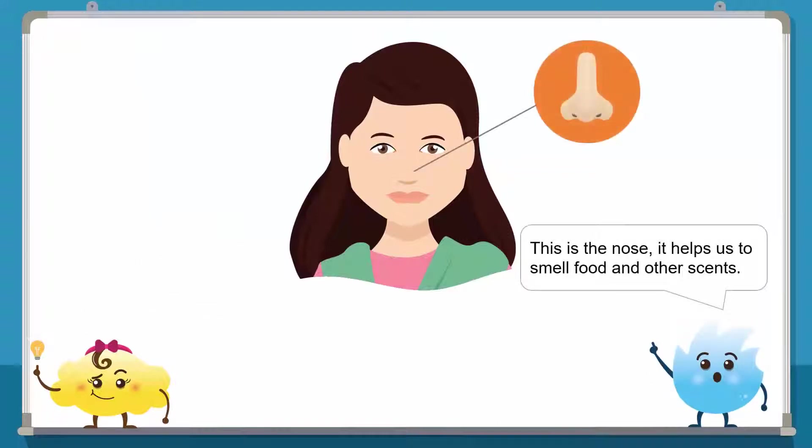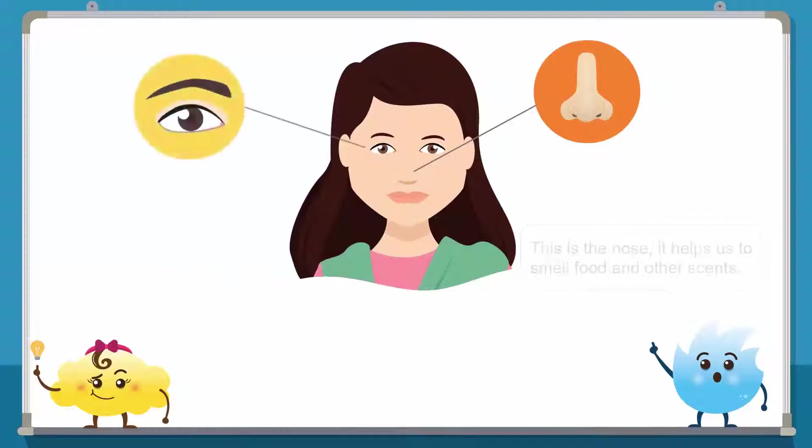This is the nose. It helps us to smell food and other scents. These are the eyes. They help us to see.